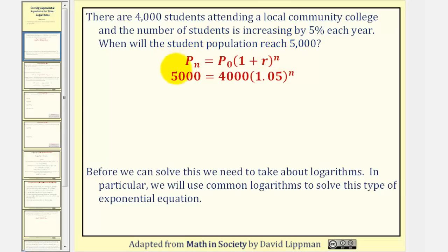Using this form of an exponential equation, P₀ is the starting population. So in this case, P₀ would be 4,000. R is the growth rate expressed as a decimal, and because the population is increasing by 5% each year, r would be 5% as a decimal, which is 0.05.